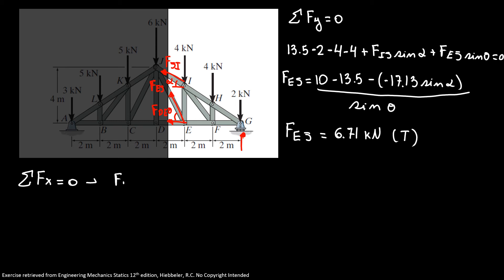Now we're going to do the sum of forces in x direction equals zero. Here we have F_DE plus F_EJ cosine of theta plus F_IJ cosine of alpha equals zero. So here our F_DE equals minus 6.71 cosine of theta minus minus 17.13 cosine of alpha, so our F_DE equals minus 11.25 kilonewtons in compression.